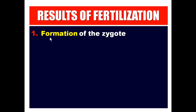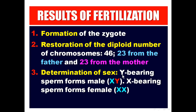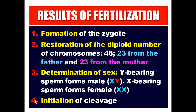The results of fertilization are: number one, formation of the zygote; number two, restoration of the diploid number of chromosomes from 23 to 46 — 23 from the father and 23 from the mother; number three, determination of sex — a Y-bearing sperm forms a male (XY) and an X-bearing sperm forms a female (XX); and number four, initiation of cleavage.